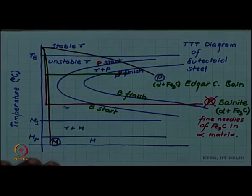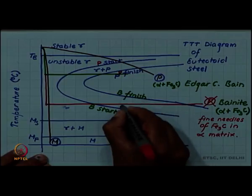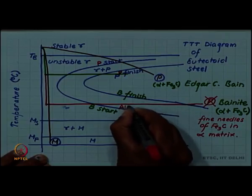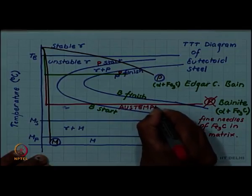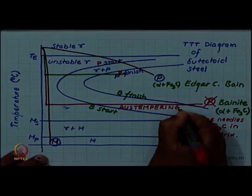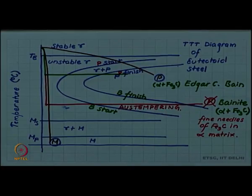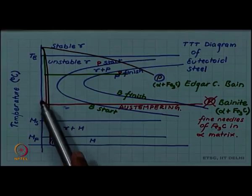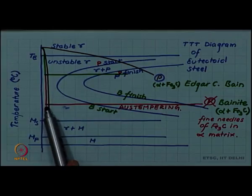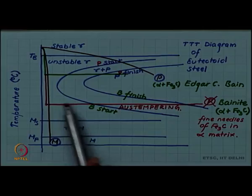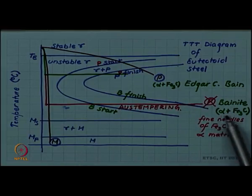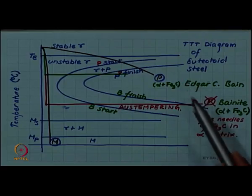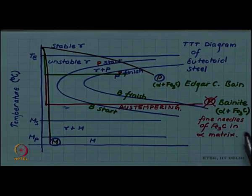This heat treatment as we have seen is named as austempering. It is used for some steel and we will call this austempering. Austempering happens when an austenite is quenched below the nose of the C curve, but above MS, and then that austenite is allowed to transform. The transformed product is alpha plus Fe3C, but it is not pearlite, but it is Bainite because of the different distribution of Fe3C and alpha.